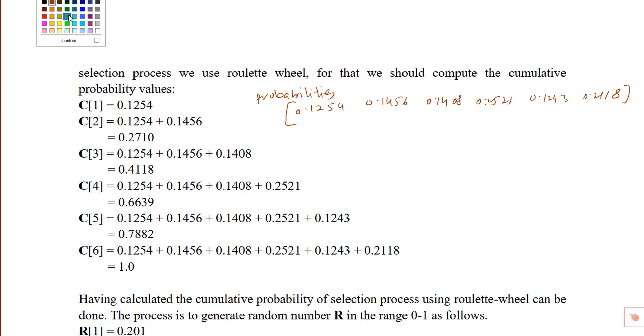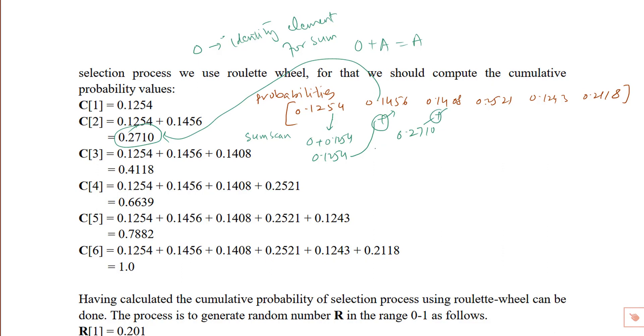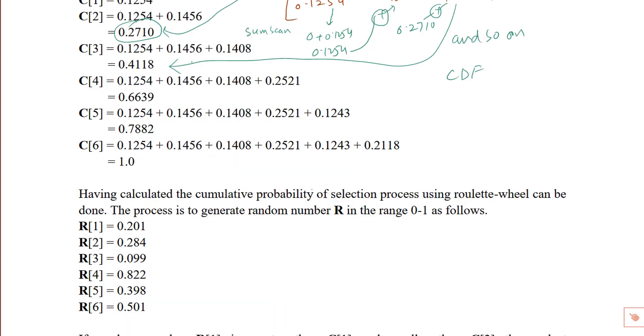Let's reproduce the probabilities. The CDF is then computed using sum scan - 0.1254 plus 0 is 0.1254, then adding 0.1456 to 0.1254 results in 0.27 and so on. The running sum is computed. If we observe the last element of the CDF is 1.0.